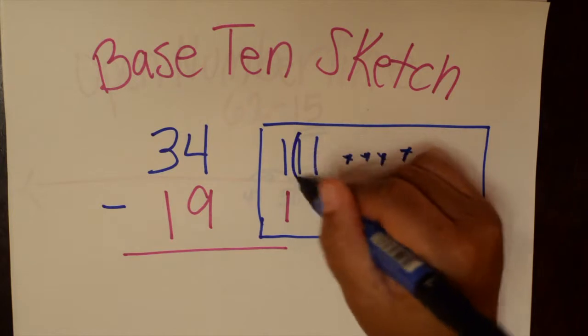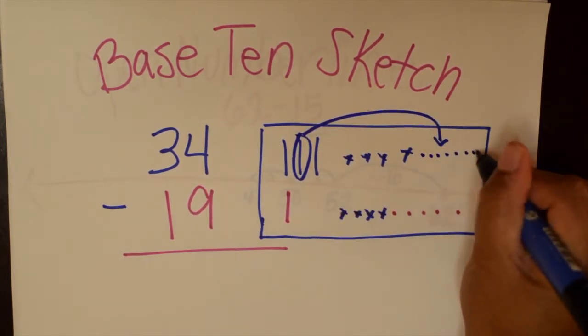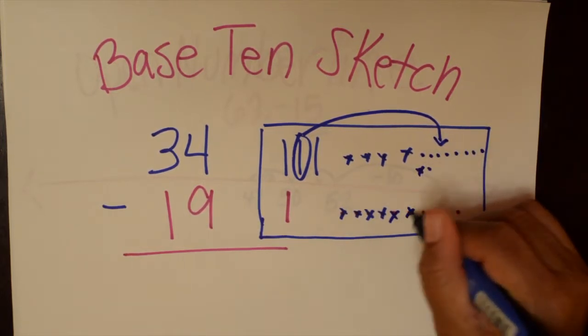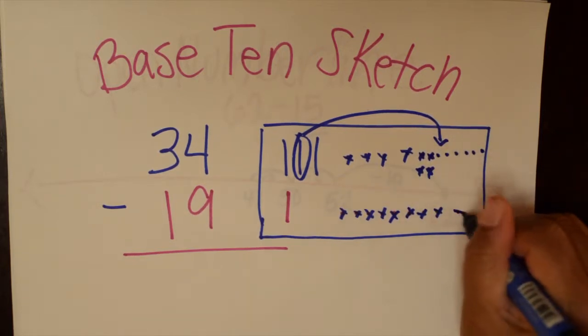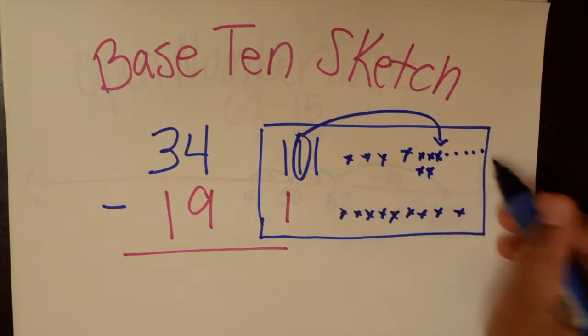And so then they would circle one, bring it over and then count 1 through 10. And then again, go back to crossing off with the matching. I think this really helps the kids to see what they're doing and then to see, okay, I have five left over.